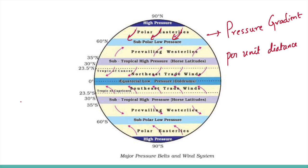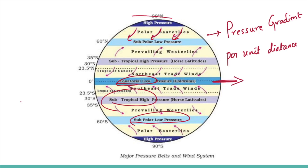There are seven pressure belts on Earth's surface: the equatorial low, the subtropical high, the subpolar low, and the polar highs. Except for the equatorial low, all remaining three belt types are present in both the Northern and Southern hemispheres.